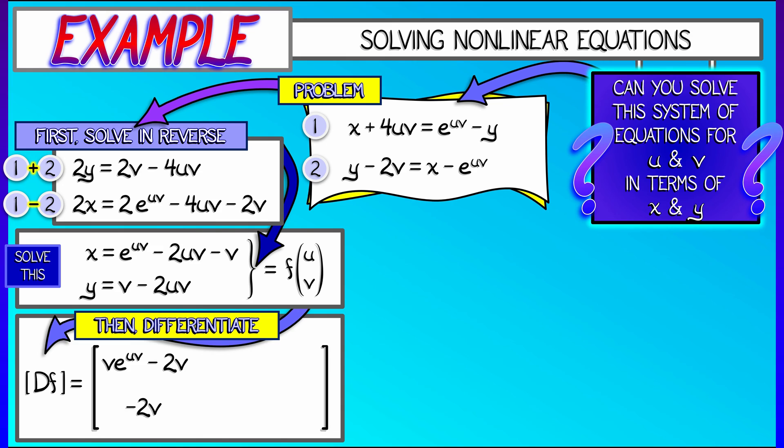When I take the partials with respect to v, I get u e to the uv minus 2u minus 1, and 1 minus 2u. Now, when is this invertible?